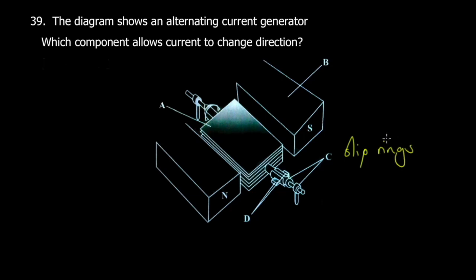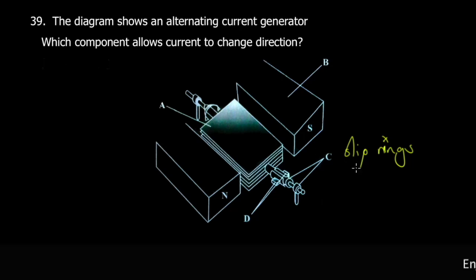One way you could have figured out what to choose here is you're supposed to choose something different than for a DC generator. For a DC generator, we have a commutator. The commutator disallows change in direction of current. Obviously, whatever we have here, which would be slip rings, is the stuff that allows the change in direction of current to happen.